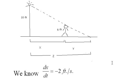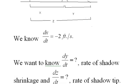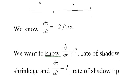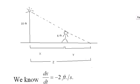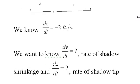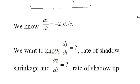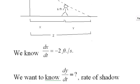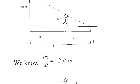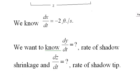We know that dx/dt, that's the change in this x value with respect to time, is negative 2 feet per second. We want to know dy/dt, which is the rate of the shadow shrinking. There it is. There's a y there. See y there? As that y shrinks, that's the shadow shrinking. And dz/dt is the rate of the tip of the shadow as he moves toward the lamp post. So dz/dt is how fast the tip of the shadow is moving. Okay, so we want to know those two things.